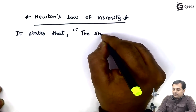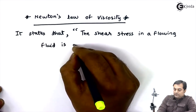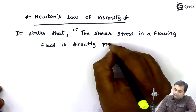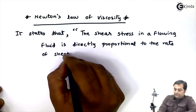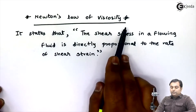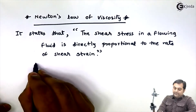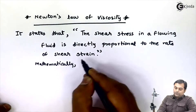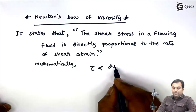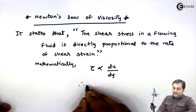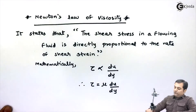The shear stress in a flowing fluid is directly proportional to the rate of shear strain. Mathematically, shear stress (tau) is directly proportional to the rate of shear strain, which is the change in velocity du divided by the change in distance dy. Once we replace the coefficient of proportionality, we have tau equals mu times du by dy.